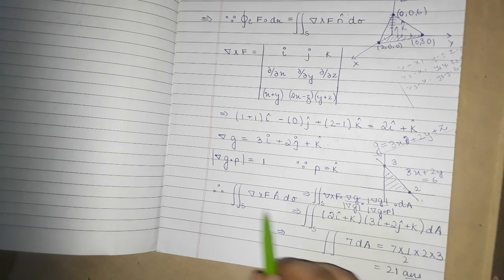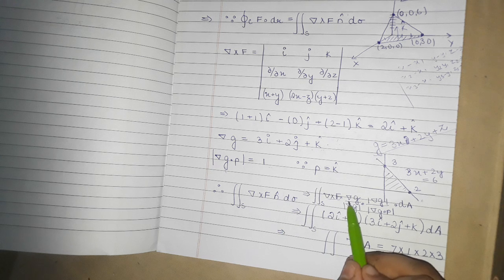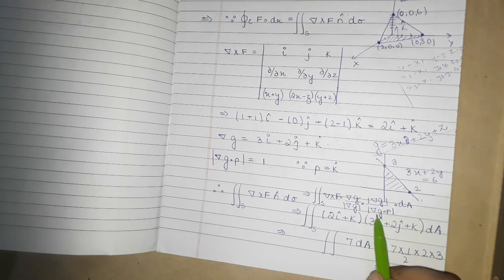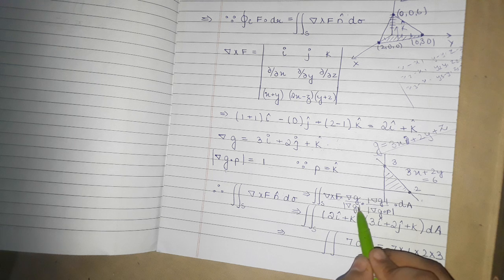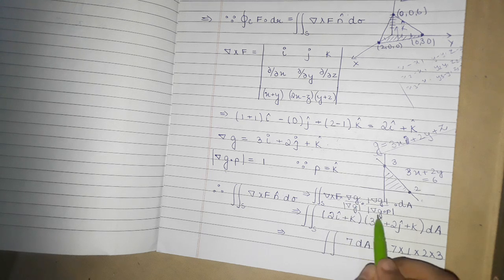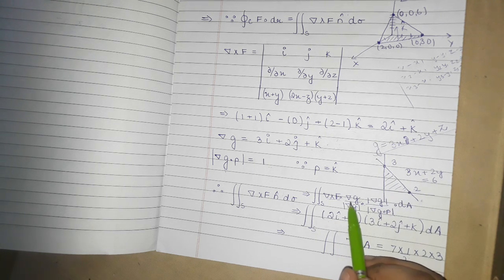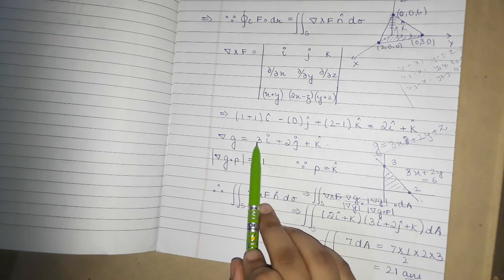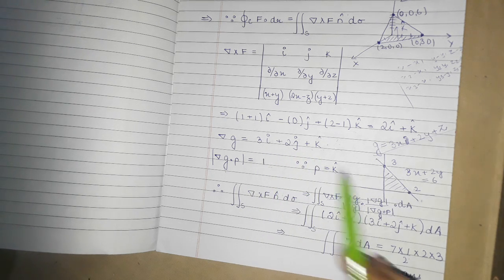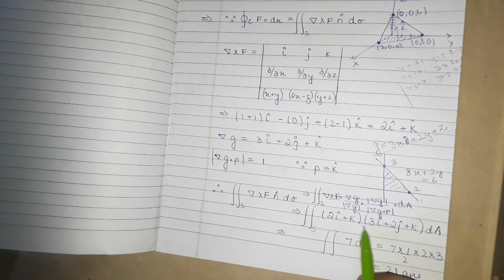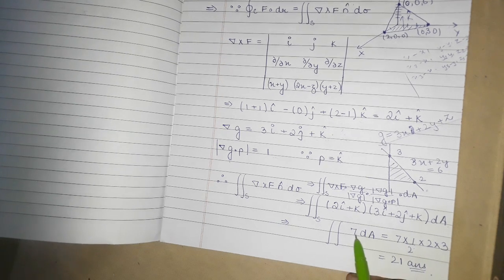Now we put all the values into our formula. We have curl F dot grad g over grad g dot p, integrated over the region. The mod of grad g cancels. So we compute curl F · grad g: curl F was 2i + k, and grad g was 3i + 2j + k. This gives 2×3 + 1×1 = 6 + 1 = 7. So the integrand is simply 7 dA.